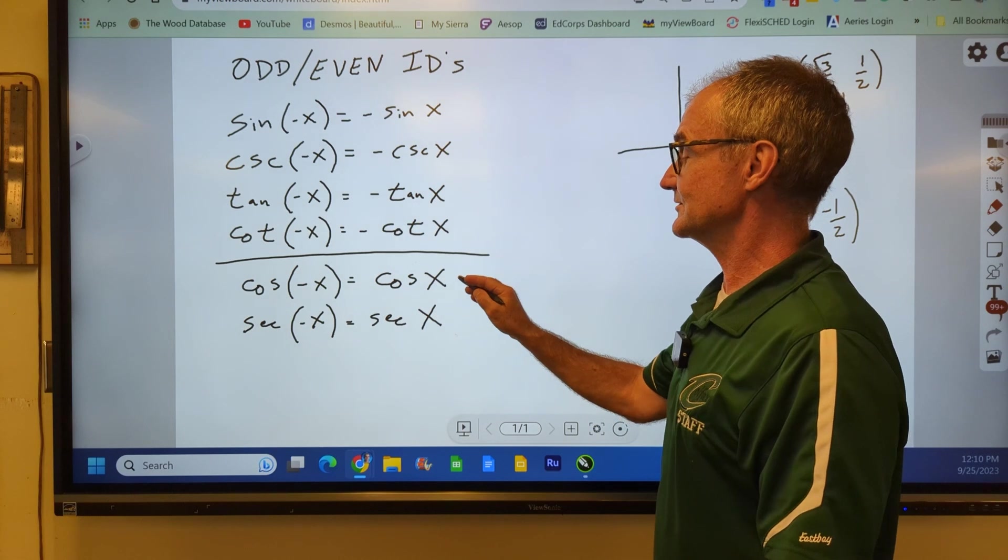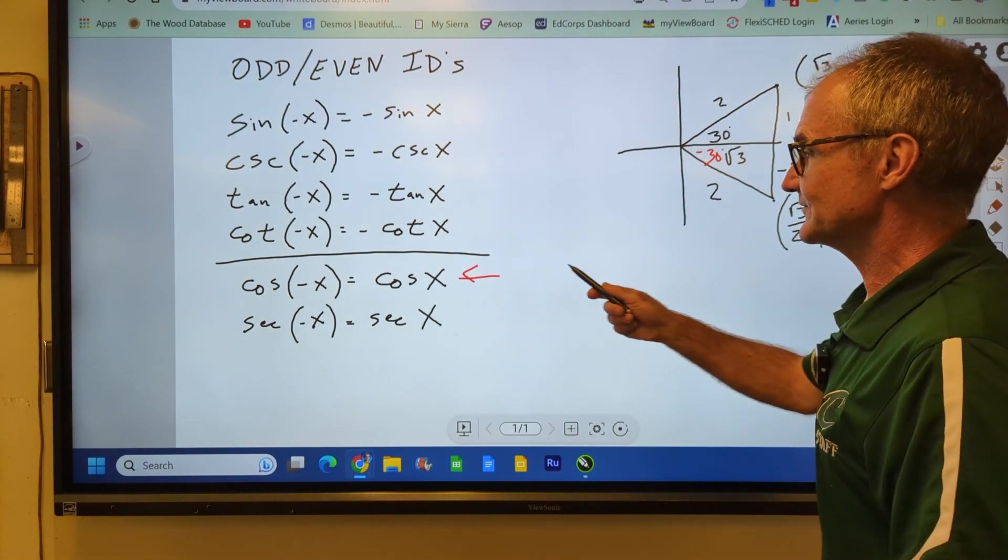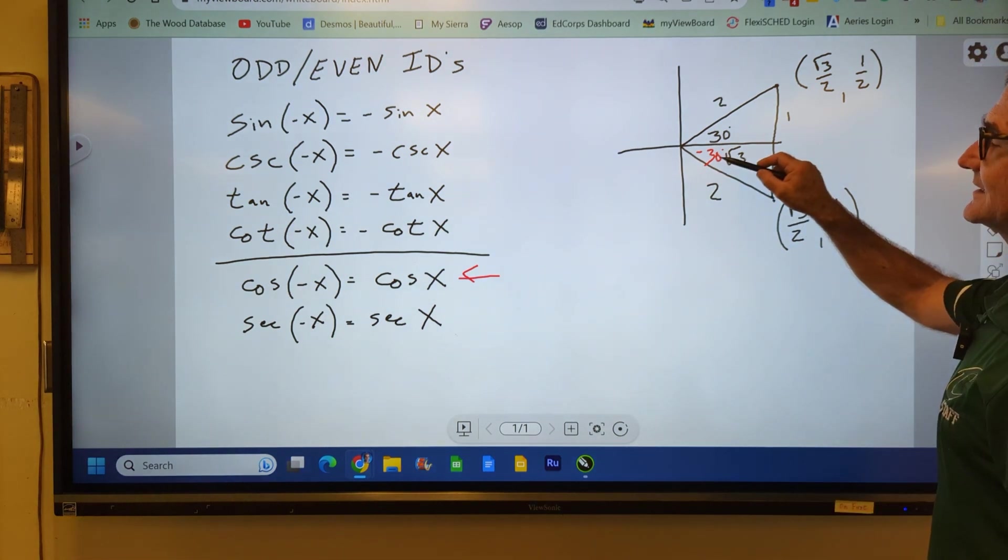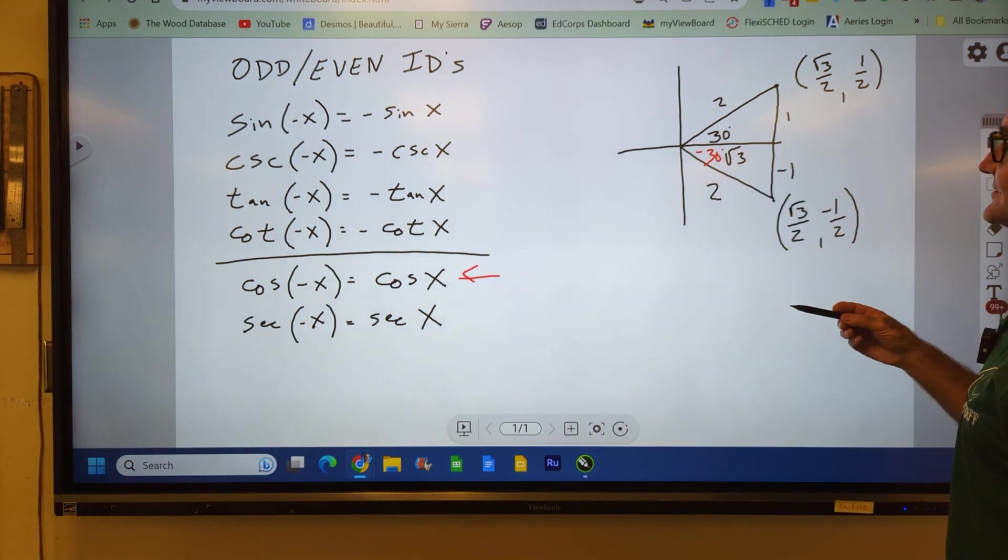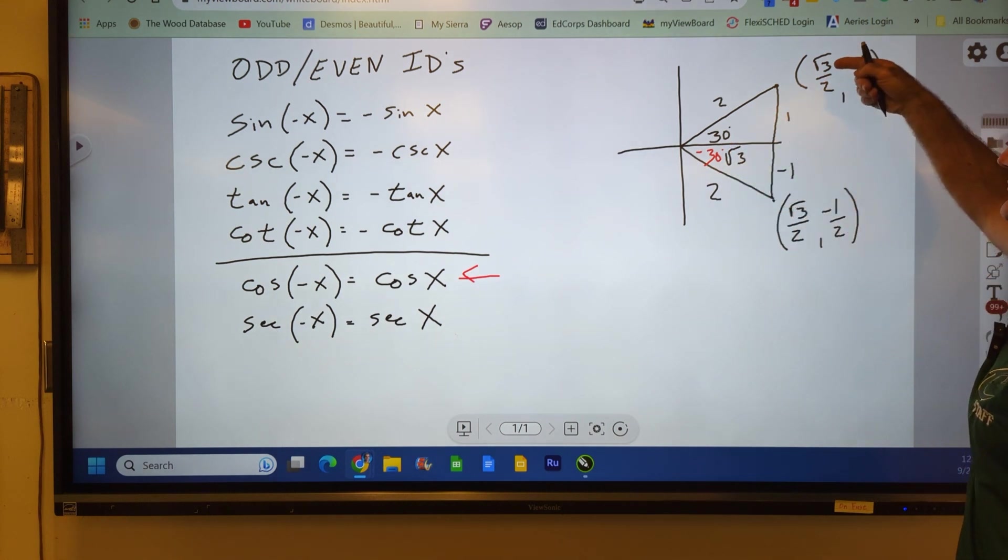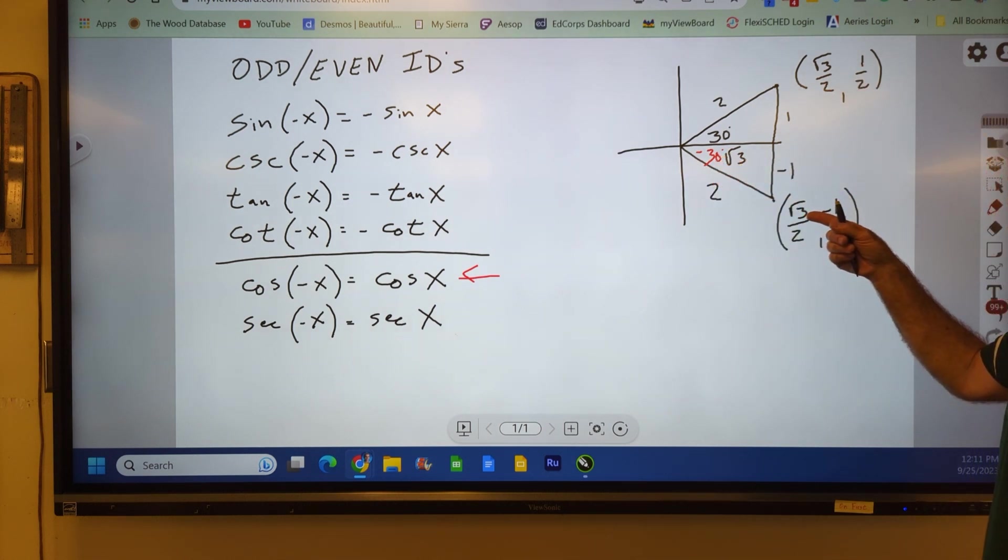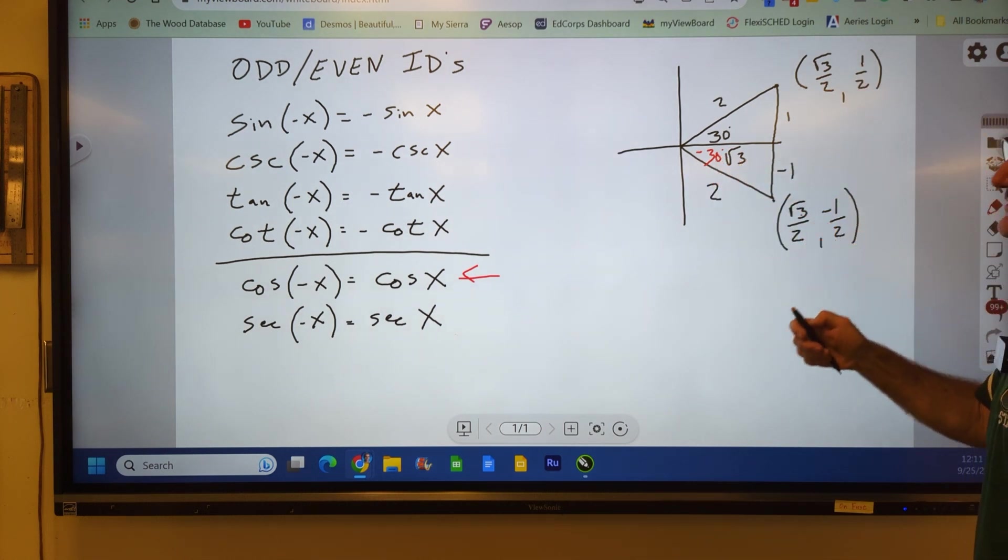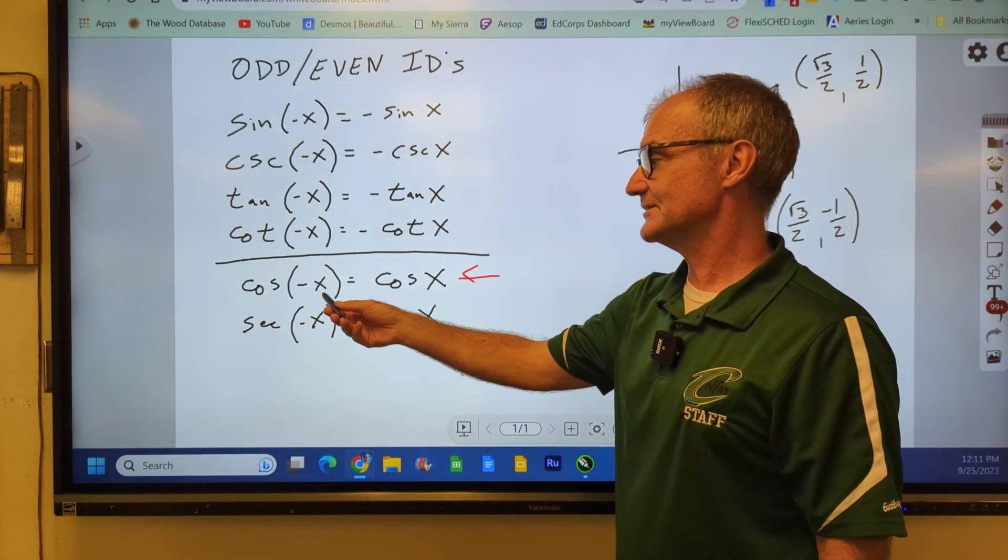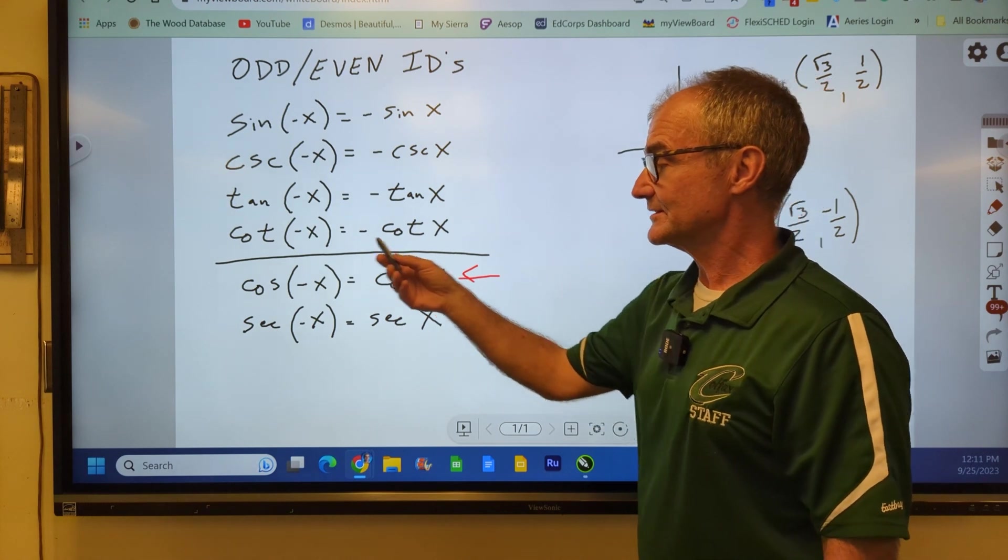So let's look at this one first, cosine of negative x. If I had a negative angle like negative 30 degrees on my unit circle here, remembering the first term is cosine. Cosine of positive 30 would be root 3 over 2. Cosine of negative 30 would be the same thing, root 3 over 2. So I could see cosine of a negative angle is going to be equal to cosine of the angle.